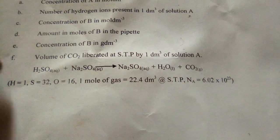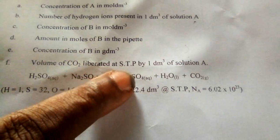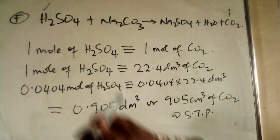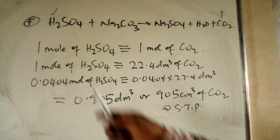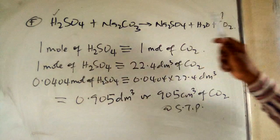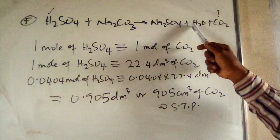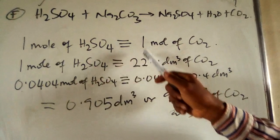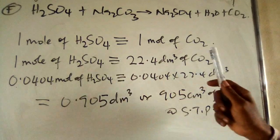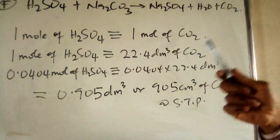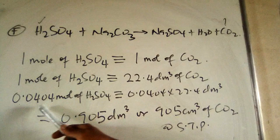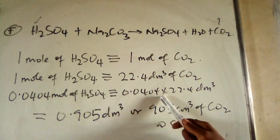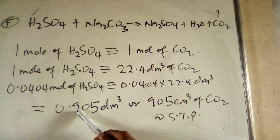Question F asks for the volume of CO2 liberated at STP by 1 dm³ of acid solution A. One mole of H2SO4 reacts to liberate one mole of CO2, which equals 22.4 dm³ at STP. Since CA = 0.0404 mol/dm³, volume of CO2 = 0.0404 × 22.4 = 0.905 dm³ of CO2 at STP.